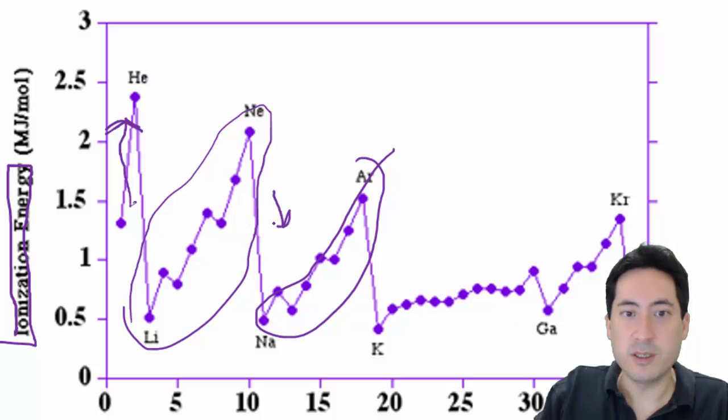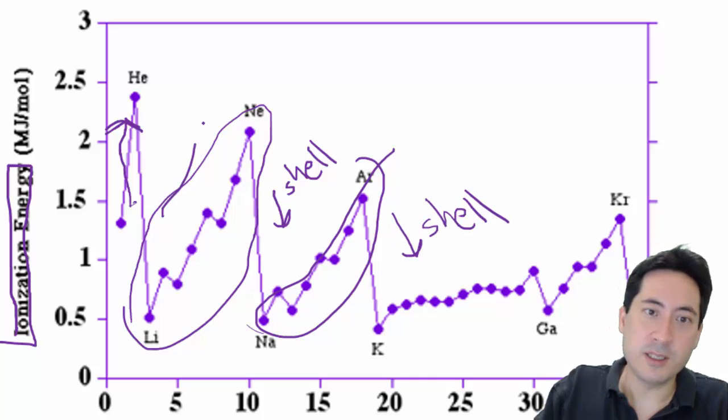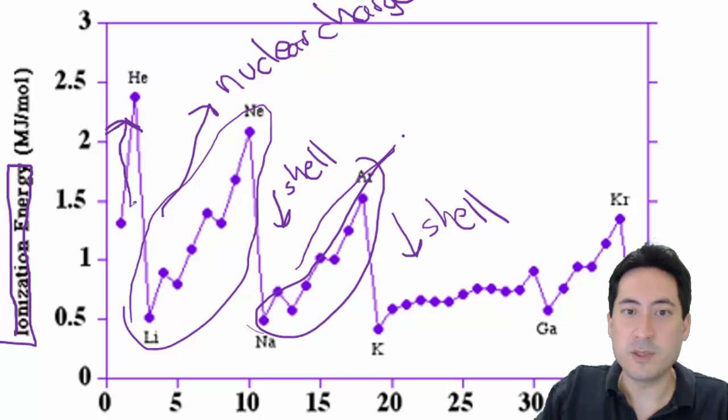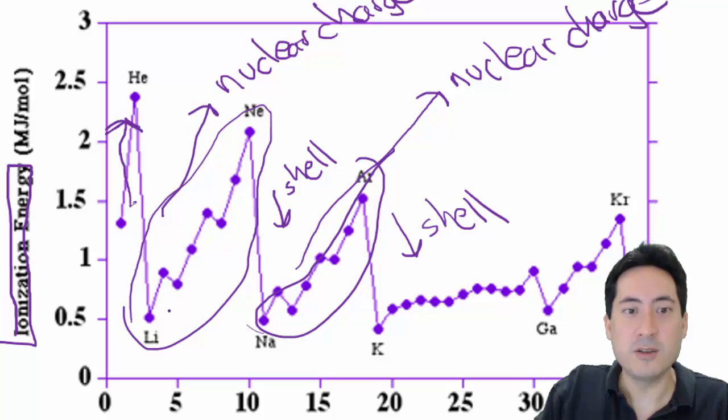And so once you jump to another whole shell, it's further away from the nucleus. And so this jump here is due to a shell, a much, much larger shell, so it's much, much easier to pull it away. Again, again here, this big jump here is due to an extra shell. This increasing here is due to nuclear charge because it's all in the same shell. And so what you're doing is basically all you're doing is within the same distance. The only thing you're doing is increasing the number of protons. So that's why the first ionisation energy increases across a period.